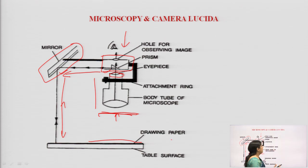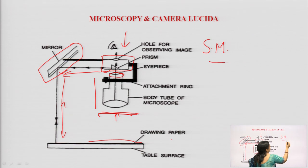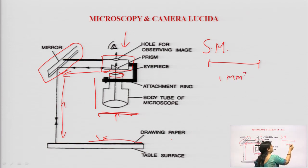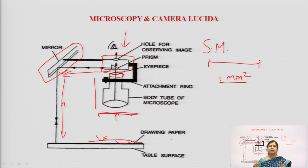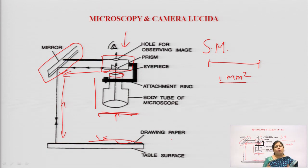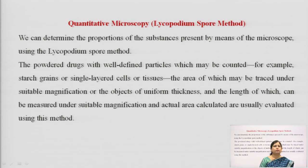Before tracing, we use the stage micrometer to prepare a box equivalent to 1 mm² on our drawing paper. All tracings for the leaf constants — stomatal number, stomatal index, vane islet number, vanelet termination number, and palisade ratio — are done within these 1 mm² boxes, allowing accurate counting and calculation.